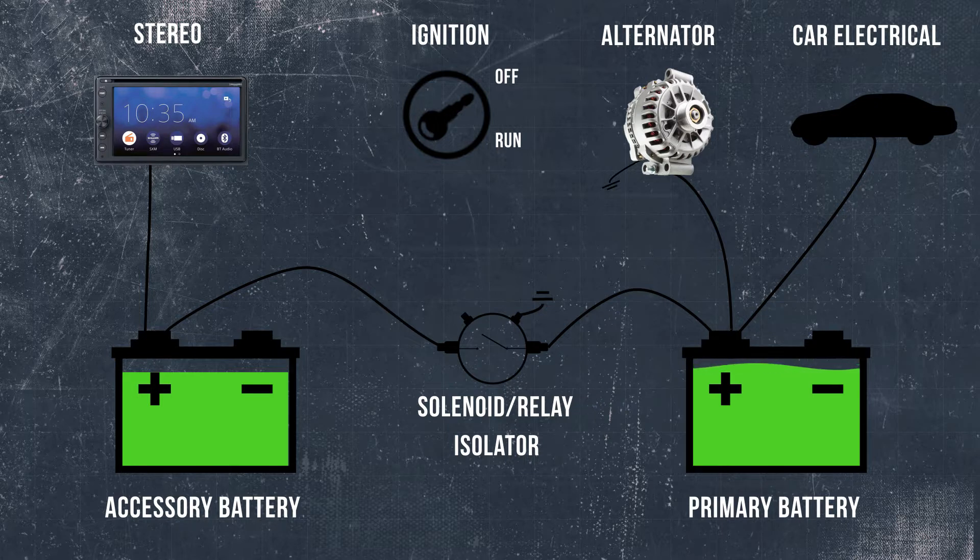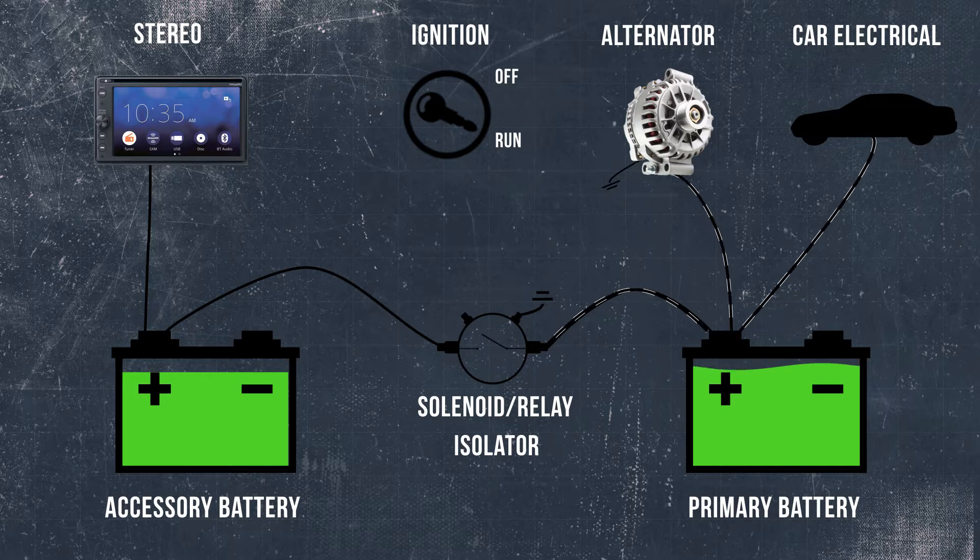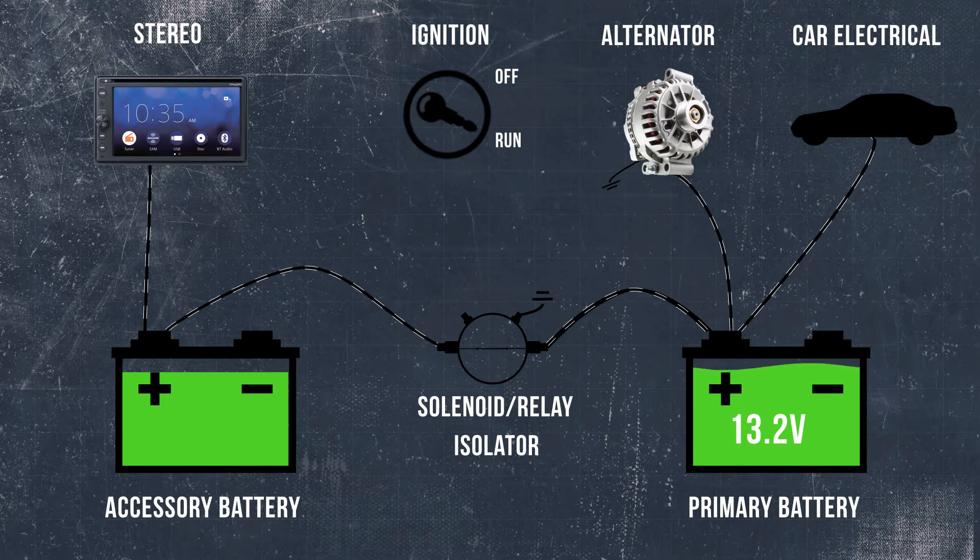These smart battery isolators are designed specifically for use in multi-battery applications. These isolators primarily monitor the charging system's voltage. Once the voltage reaches 13.2 volts, the solenoid automatically connects the auxiliary battery to the charging system.